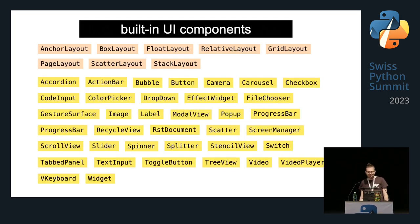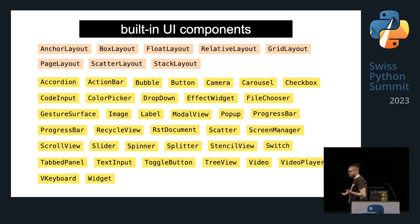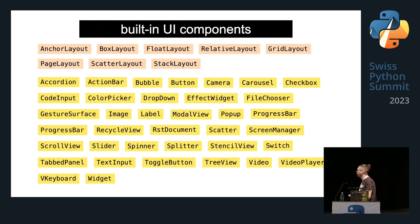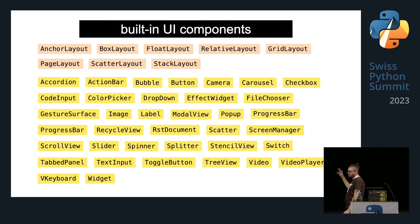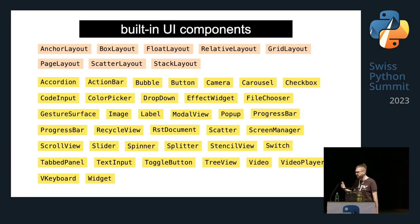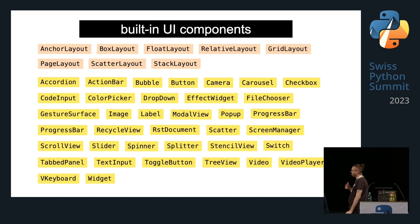It's a UI framework, so we also have a lot of UI components. The first ones are for layout. Then we have other components like accordion, slider, spinner, toggle button, preview, video player, camera, input, image, and many more.